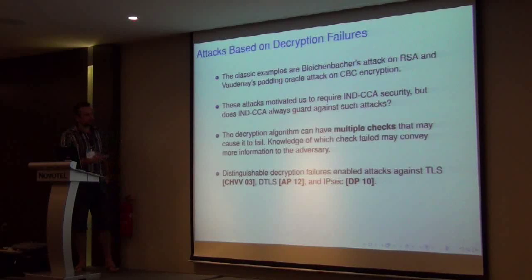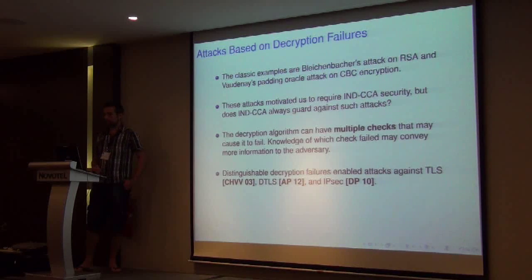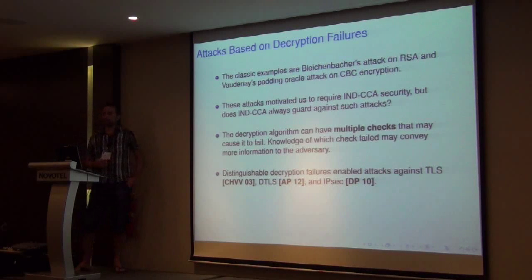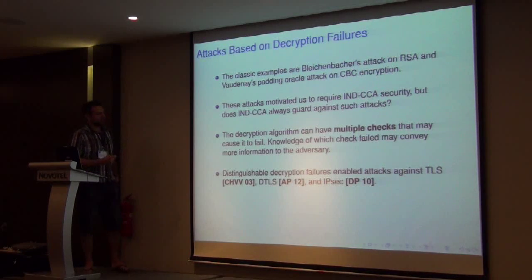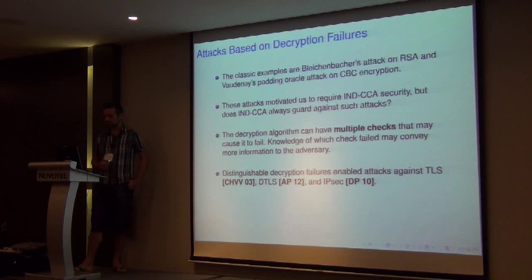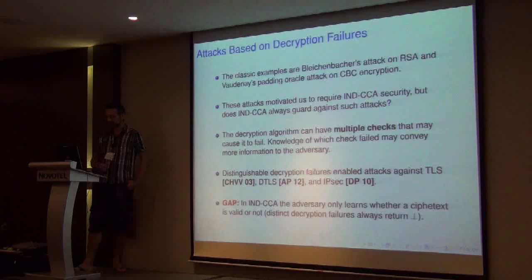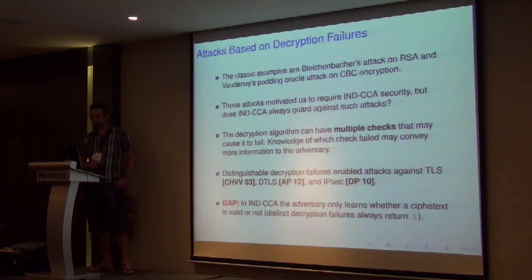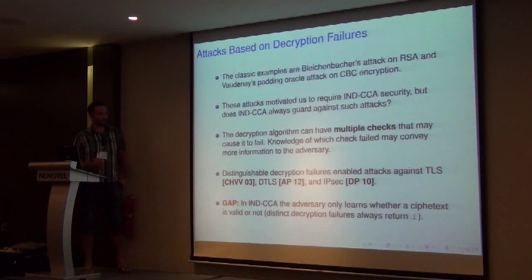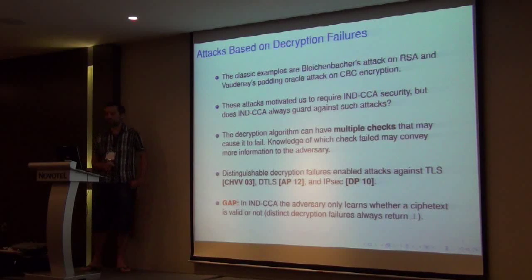This is because during decryption, an algorithm might perform a number of checks, and if any of these checks fails, decryption fails. However, if the adversary is able to distinguish between which check failed, this conveys more information to the adversary. Such ability to distinguish the exact decryption failure has enabled a number of attacks against, for example, TLS, DTLS, and similar protocols. On the other hand, in the NCCA model, as we specify symmetric schemes, the adversary only gets the same error symbol ⊥ regardless of which decryption failure occurred — so he always gets the same symbol ⊥. This creates a gap between what the adversary can do in practice and what the security model NCCA captures.